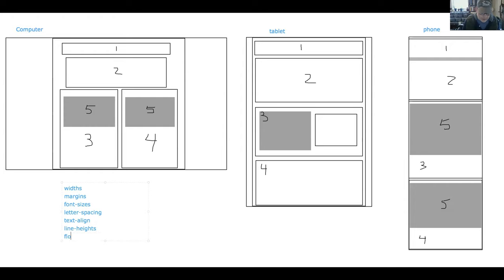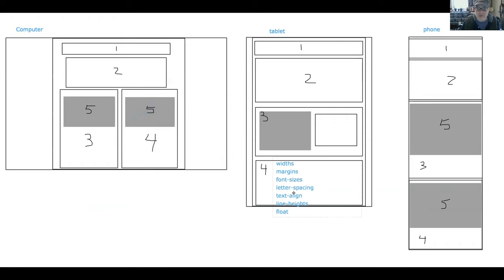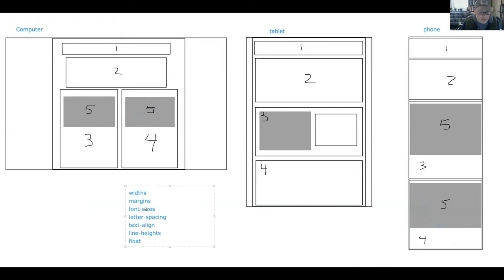What are the line heights for each element? Are things floating one way or another? We're going to have to think about how those change and adjust for each screen size - the phone, tablet, and computer - using the same selectors in our style sheets.